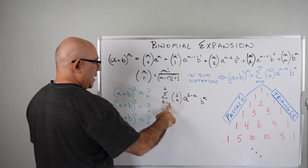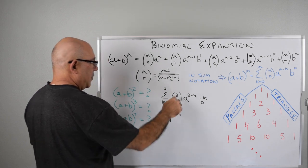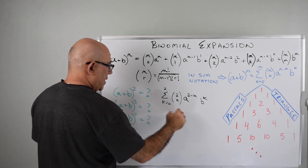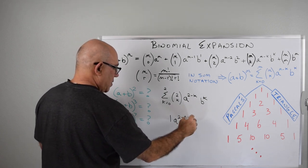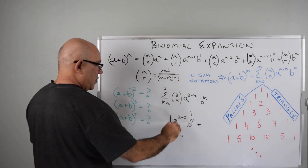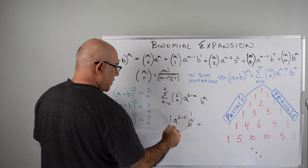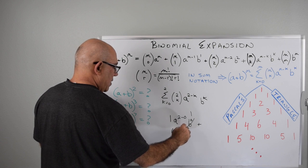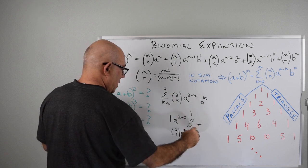When we start with K as 0, we get combination(2, 0) which is 1. So we get A to the 2 minus 0, times B to the 0 — that's 1 — giving us A squared. Plus, now K is going to be 1. So we have combination(2, 1) times A to the 2 minus 1, times B to the 1.